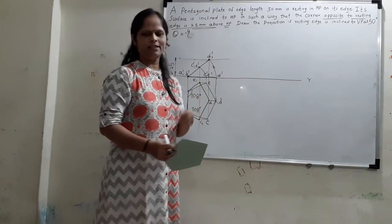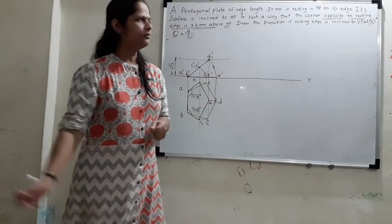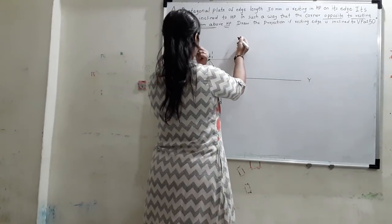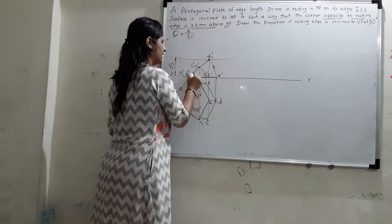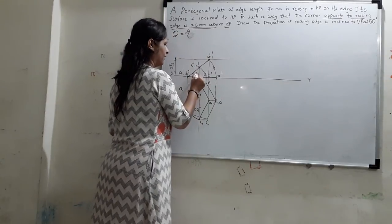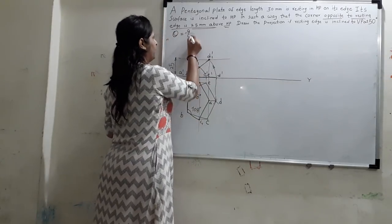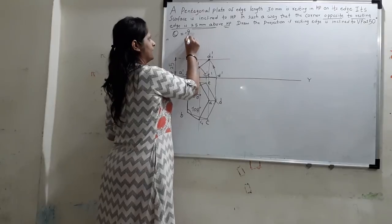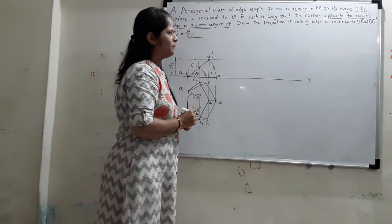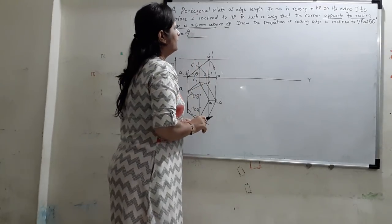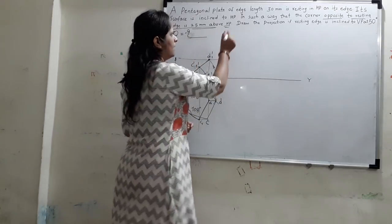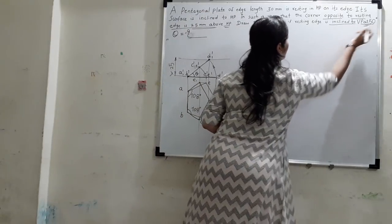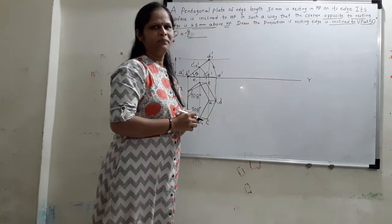Now we go to the third step. We can measure the angle theta from the front view and write the answer, which is asked in the exam. Then for the last part: draw the projection if the resting edge is inclined to VP at 50 degrees.